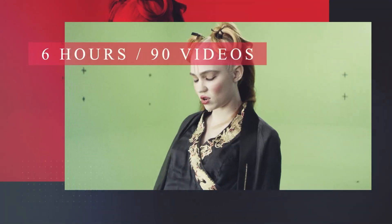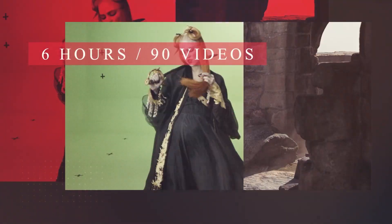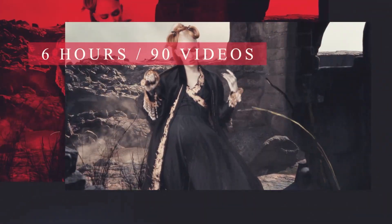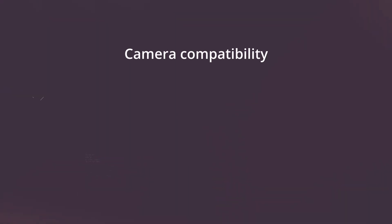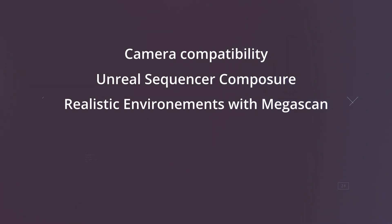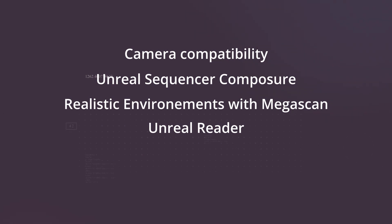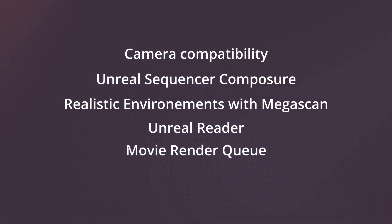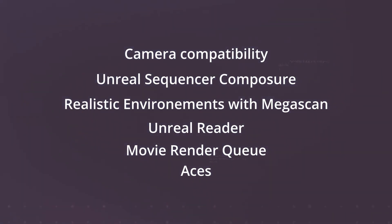This is more than 6 hours of content, well organized in 9 videos. Some of the key takeaways of this masterclass are: work with cameras between Unreal and Nuke, use the Sequencer and Composure in Unreal, use the Megascan Library to build realistic environments, use Unreal Reader to comp real-time renders, use Unreal 5 Movie Render Queue to render out multi-EXR layers, and use ACES to maintain color accuracy between Unreal and Nuke.